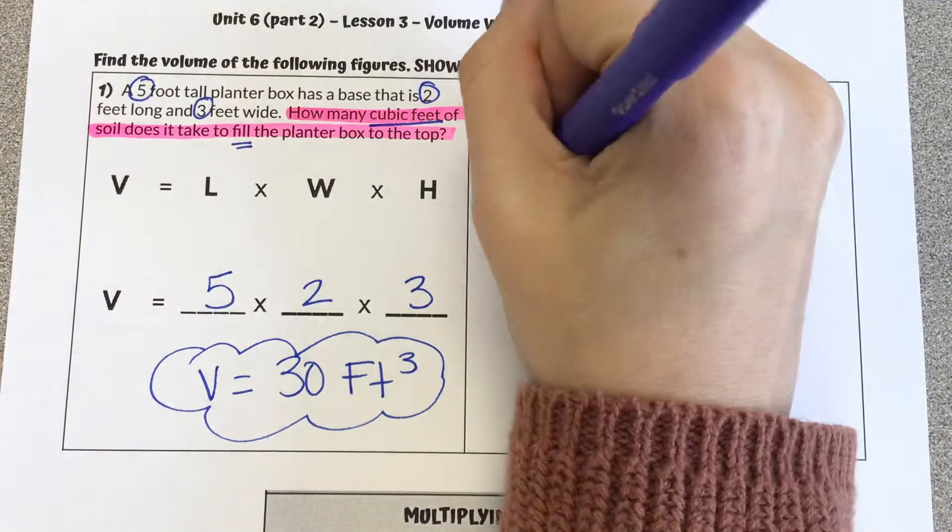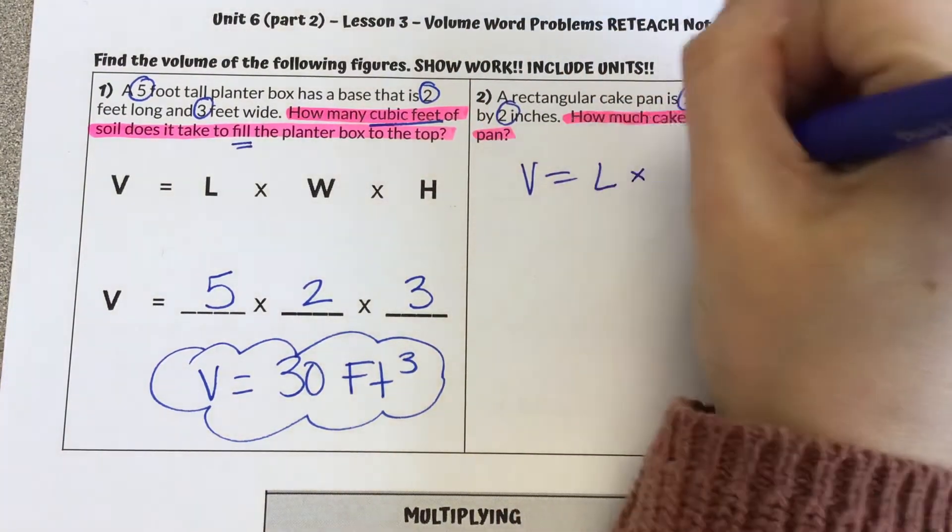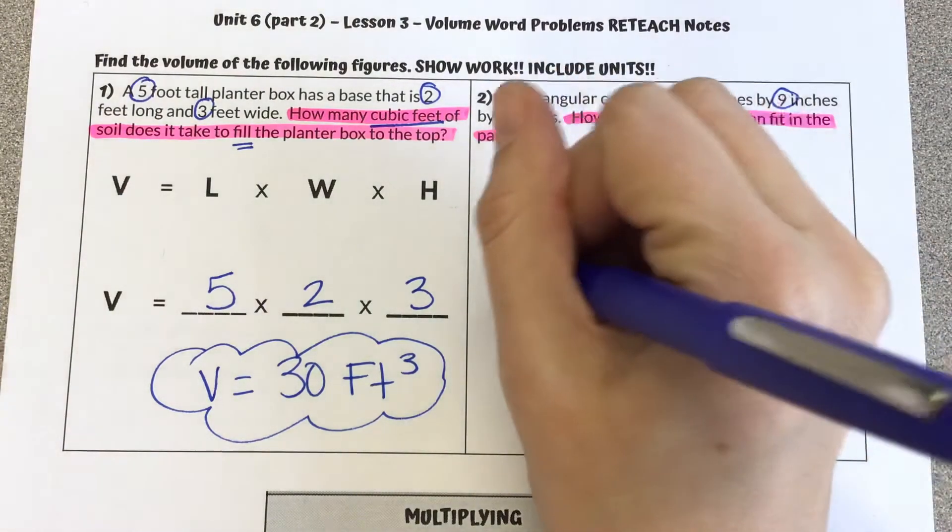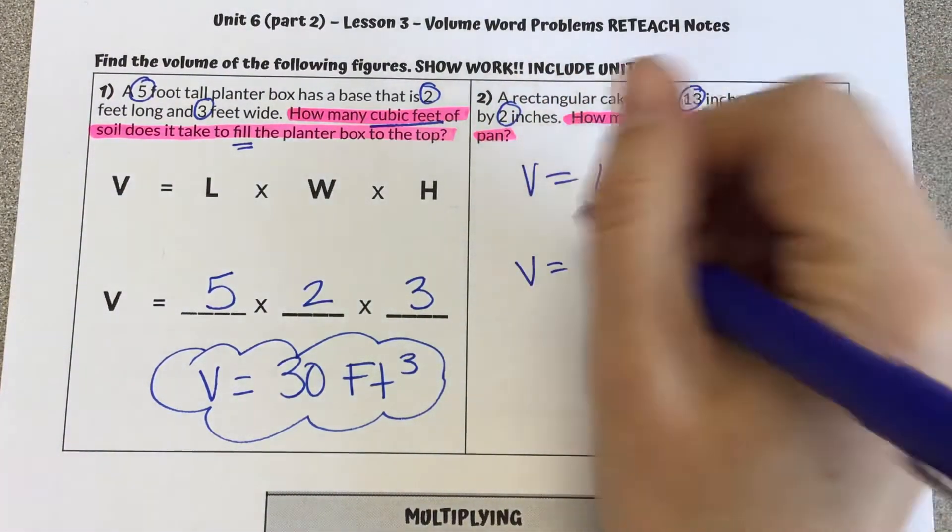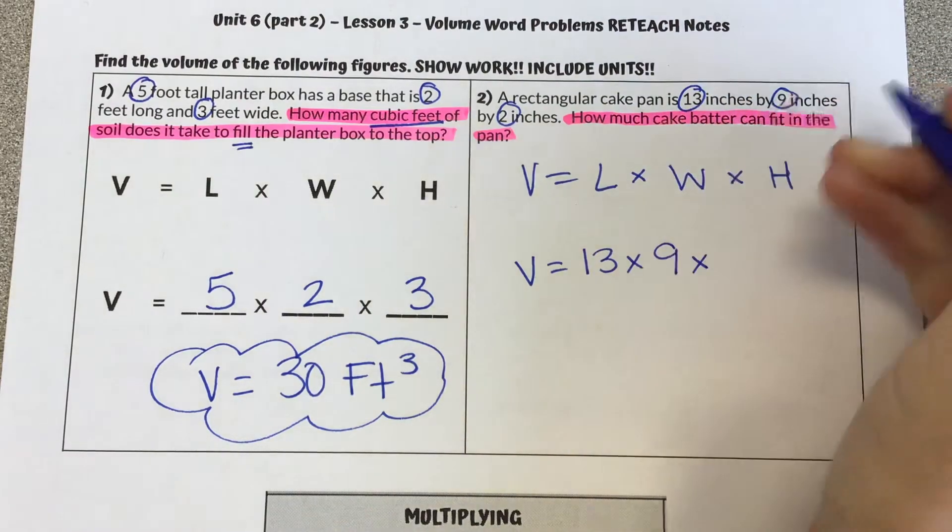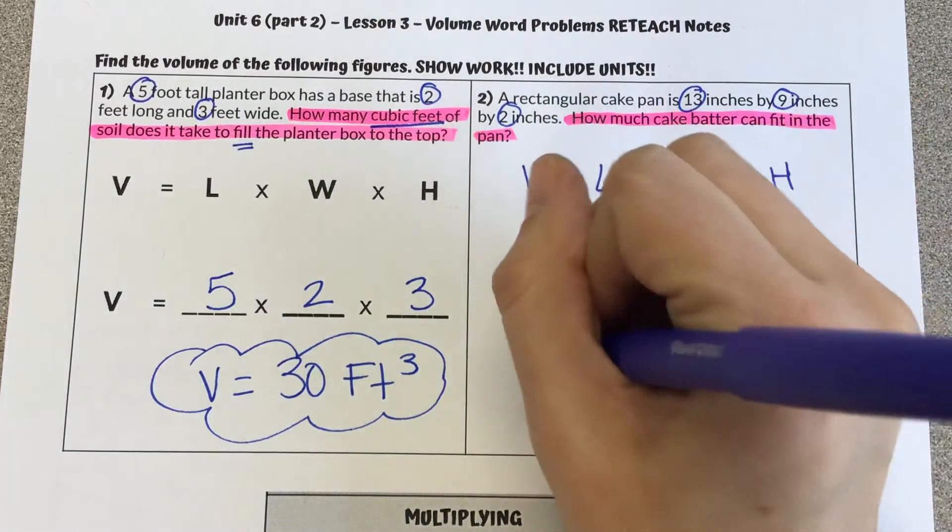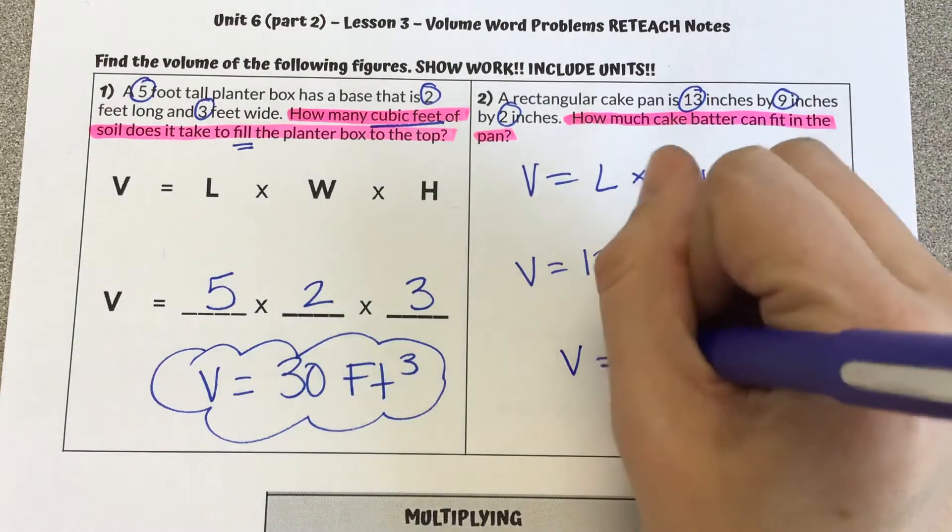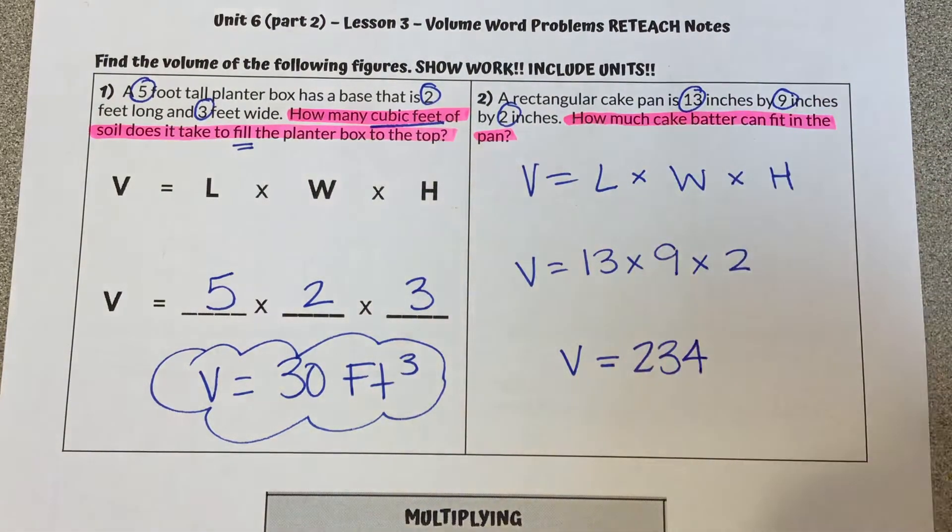So we are using our formula, volume equals length times width times height. So I am plugging in 13 times 9 times 2. So our volume, when I multiply that together, is 234 inches cubed.